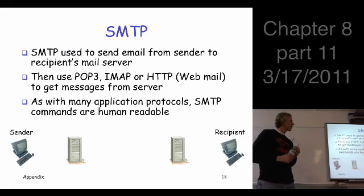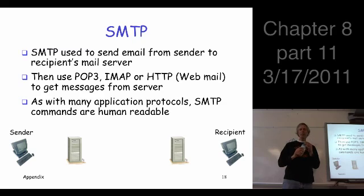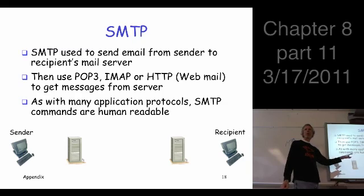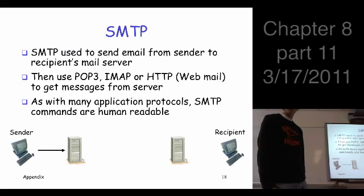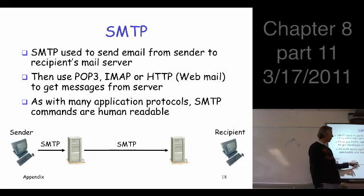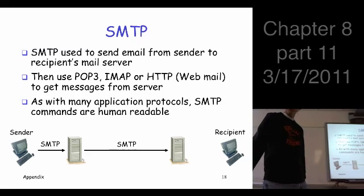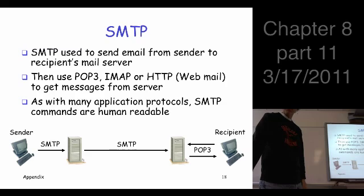SMTP — this is used to send email from server to server, sort of inside the network itself. This is how your email gets from point A to point B. When you actually want to get the mail to or from the server, a different protocol is involved. I send my email, it goes to my email server, then through the network SMTP is used to get it where it needs to go, and then they use some other protocol to actually pull the email from their server.